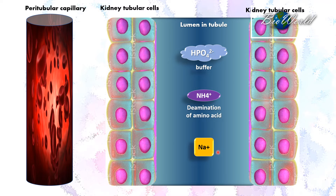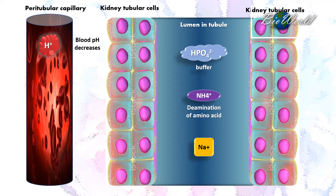My discussion now is to focus on blood pH regulation. Let's say the hydrogen ion concentration in the blood begins to increase — it may increase due to respiration, diet, or even metabolic processes. When the hydrogen ion concentration increases, the blood becomes acidic, and the blood pH will begin to decrease. To help stabilize the blood pH, the kidney tubular cells play a significant role.